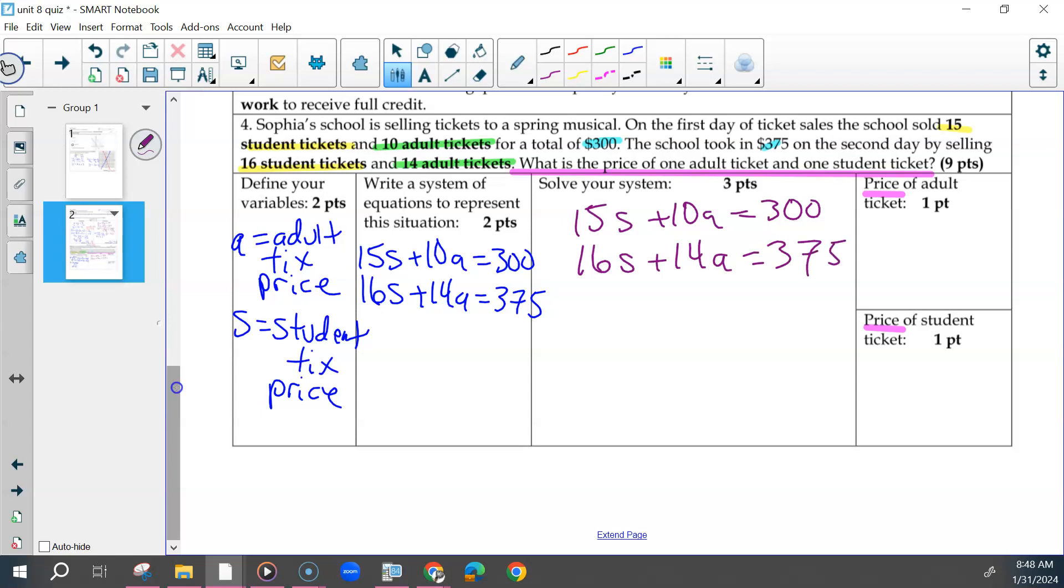So if I multiply the first one by 7 and the second one by 5, we get 105S plus 70A equals 2100 and 80S plus 70A equals 1875. And then I could eliminate my A's.